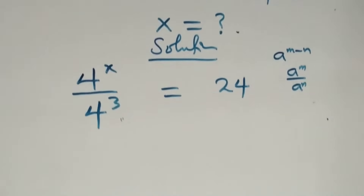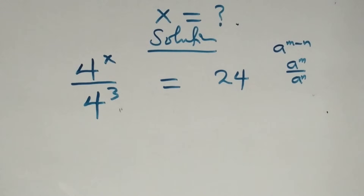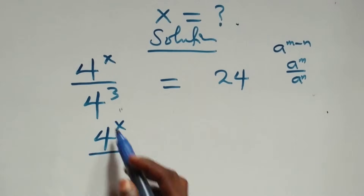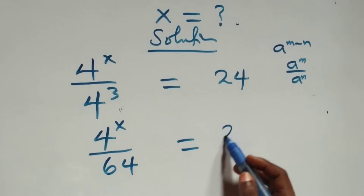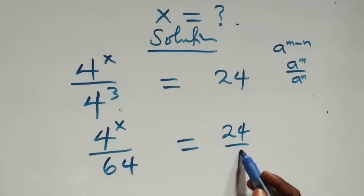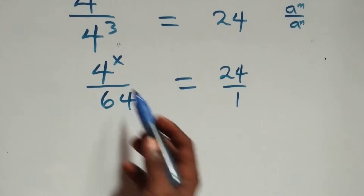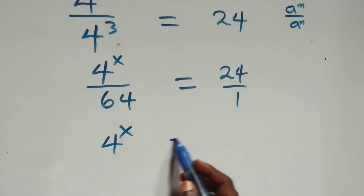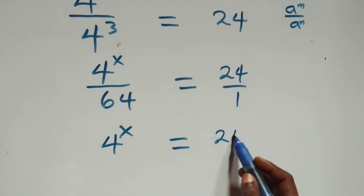The next step here is the same thing as four raised to power x over sixty-four equals twenty-four over one. We then cross multiply: four raised to power x times one equals four raised to power x, which equals twenty-four times sixty-four.